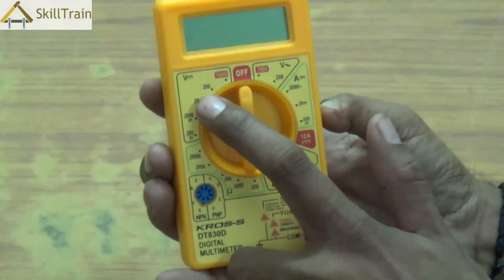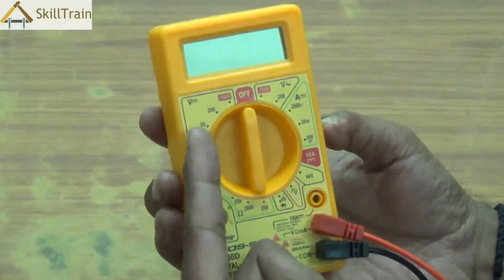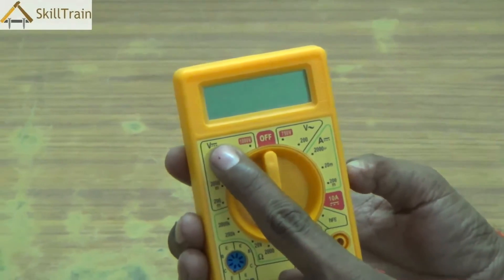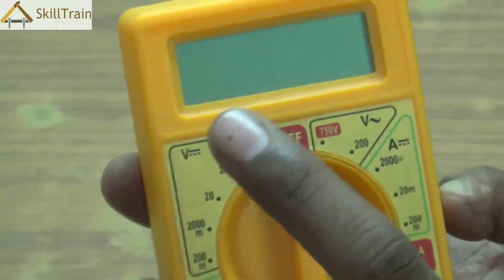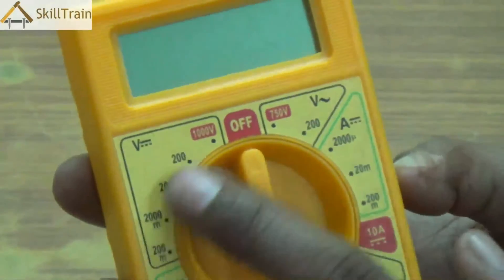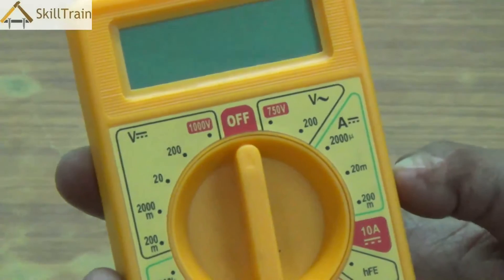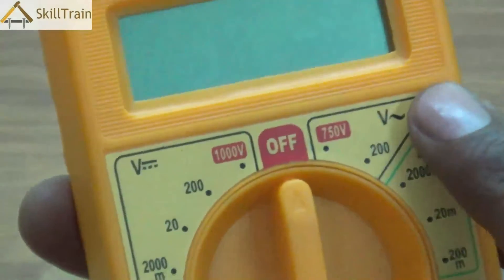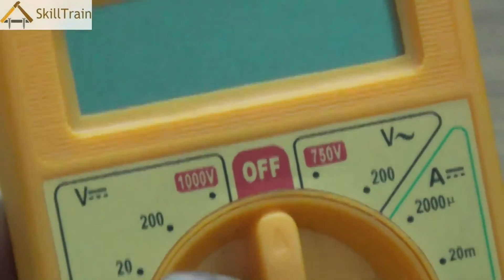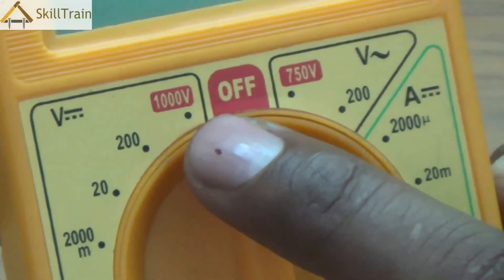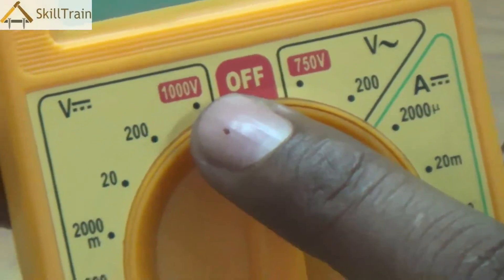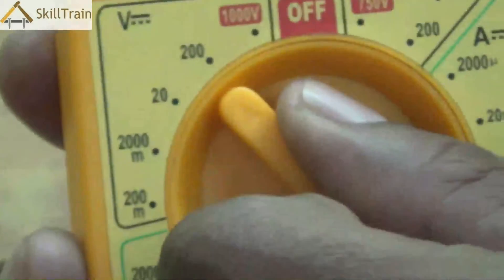Now on the left hand side, the top left hand side, you'll see something written as V followed by a dash and a few dots there. Now this is the symbol for DC. So on the left hand side, when you turn the knob to the left, you will be able to check the DC voltage where the range is between 20 volts to 1000 volts.